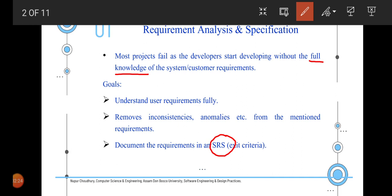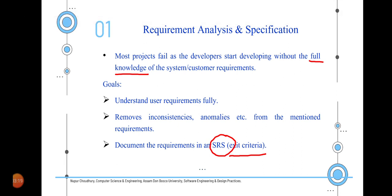It is important to understand that customer requirements are not fully complete when they provide the first instance to the developers. A system analyst must identify any inconsistencies and anomalies and report back to the customer so they can be sorted out. The third important goal is documenting the requirements in an SRS, which is very important from the perspective of both the developer and the maintenance team.